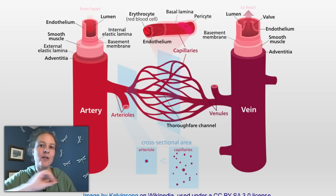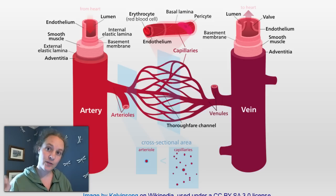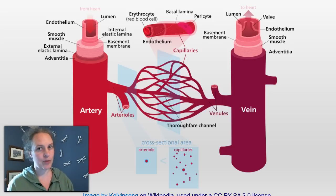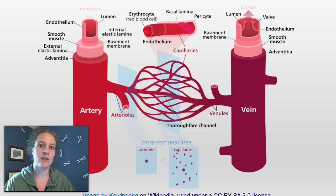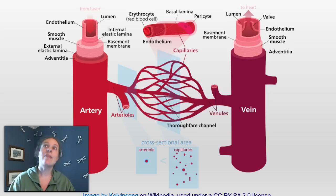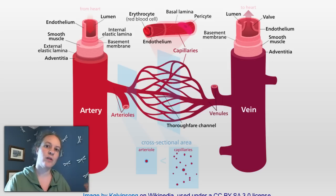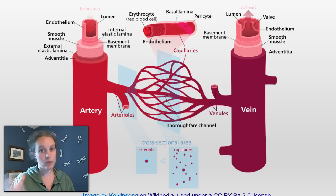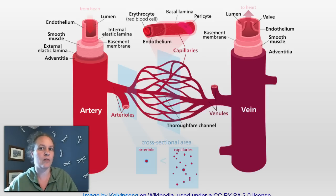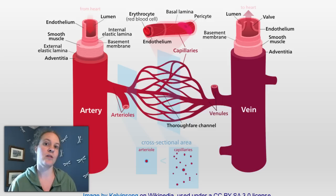First, if we damage the endothelial cells, they aren't going to be able to produce nitric oxide as efficiently, or there will be less nitric oxide synthase available — and that can cause damage to the whole blood vessel. Conversely, if there's a problem with nitric oxide signaling even if the endothelium is healthy, that blood vessel can also get damaged. Anything that interferes anywhere along that process can potentially cause vascular disease or distress.